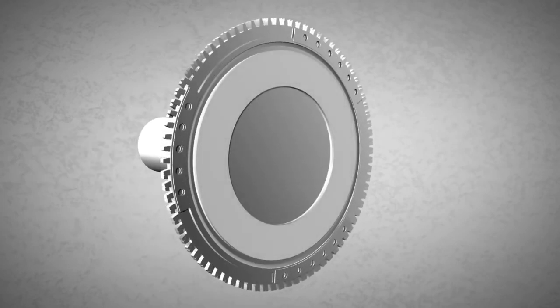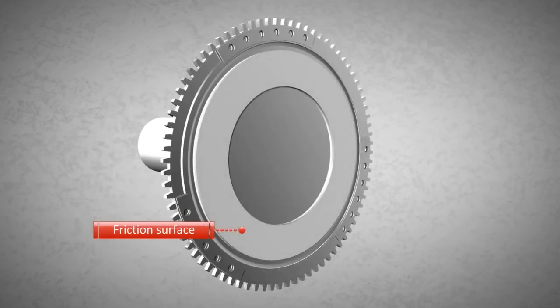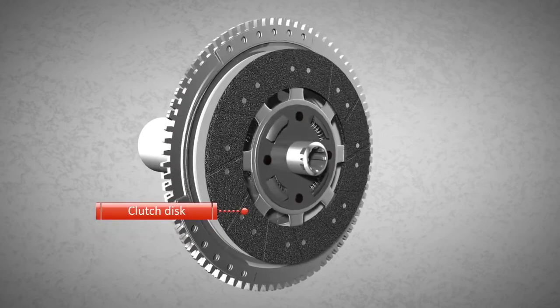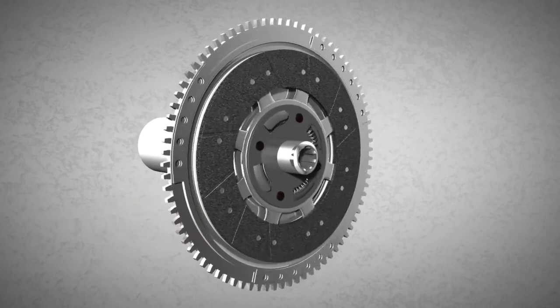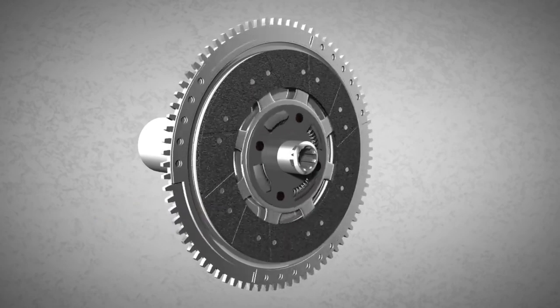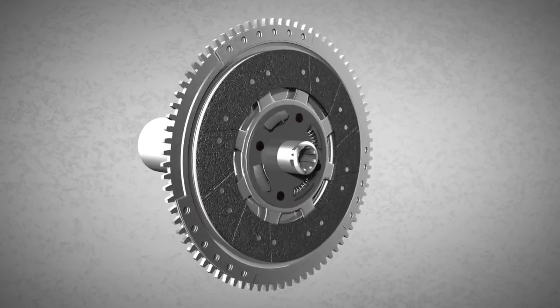The flywheel is equipped with a friction surface. The clutch disc has friction surfaces too. When the friction surface of the flywheel and the friction surface of the clutch disc are brought into contact with each other, the clutch disc rotates.